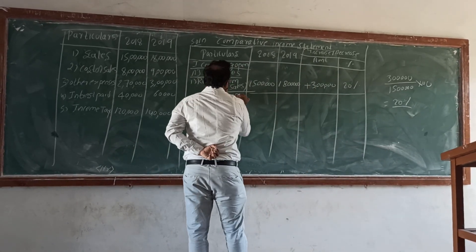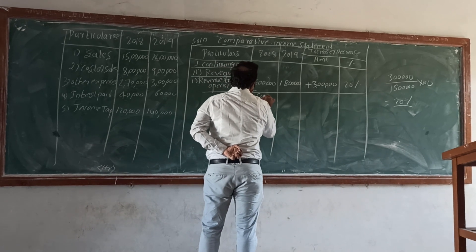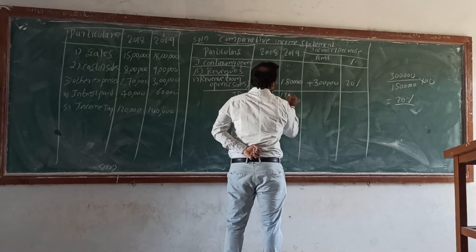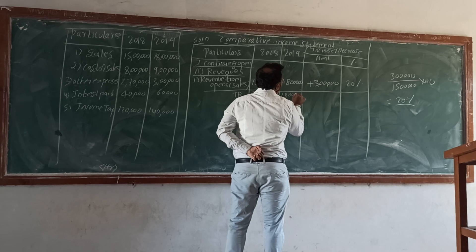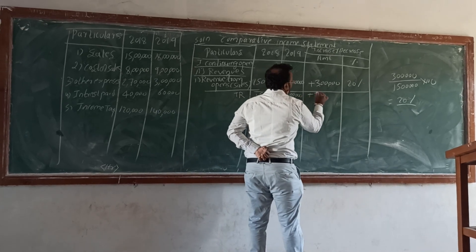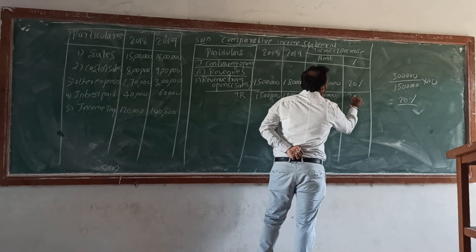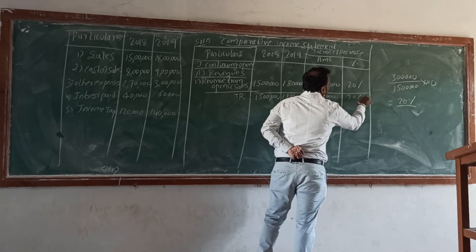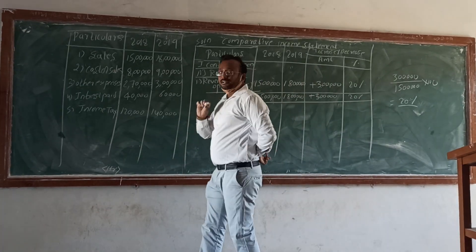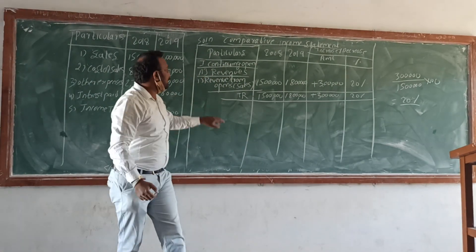Total revenue: first year 15 lakh, second year 18 lakh, increase 3 lakh, and the same 20% change. Other incomes are not provided in this problem.